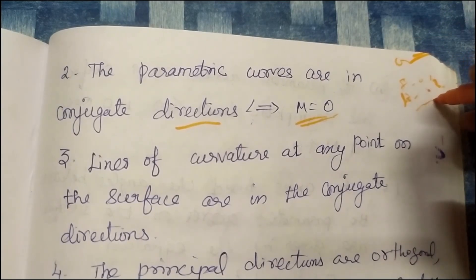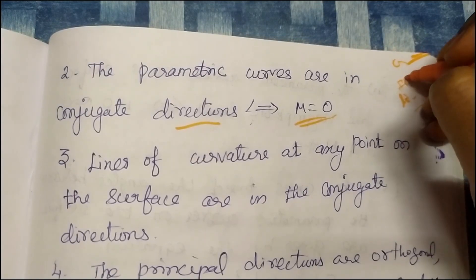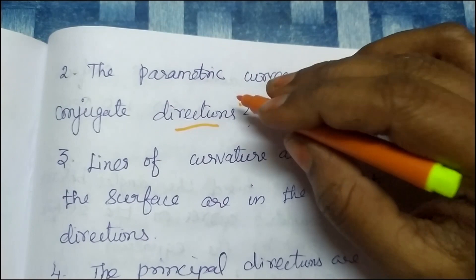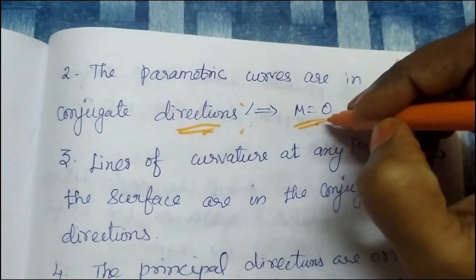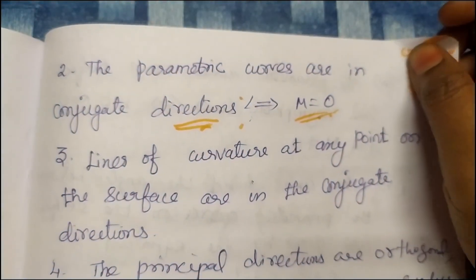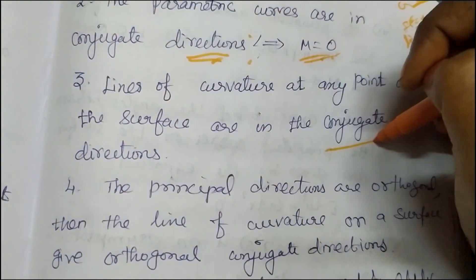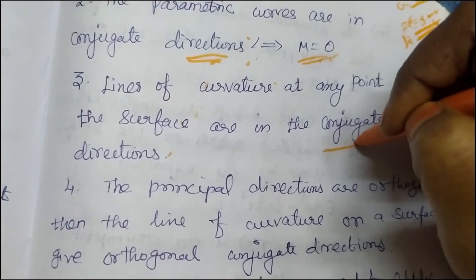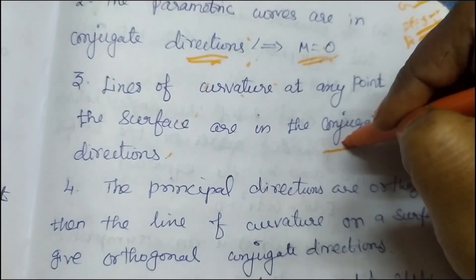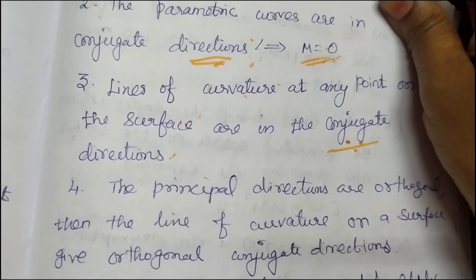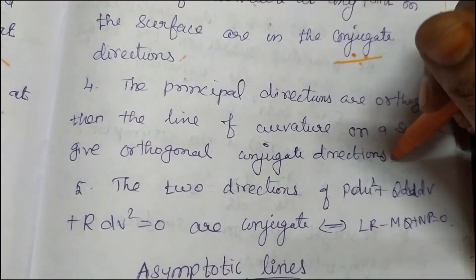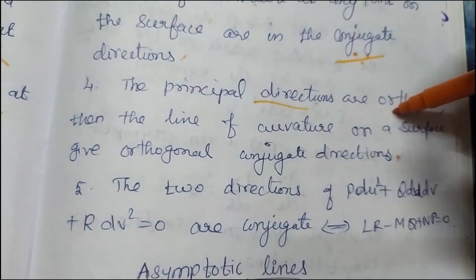Line of curvature: orthogonal. F equal to 0 and M equal to 0. So the parametric curves — conjugate direction M equal to 0. Line of curvature: any point on the surface in conjugate direction. Line of curvature M equals to 0 is the condition. Line of curvature is the same as conjugate direction. The principal directions are orthogonal. Line of curvature on surface — orthogonal conjugate direction. Principal direction is orthogonal.